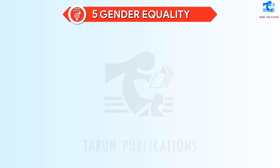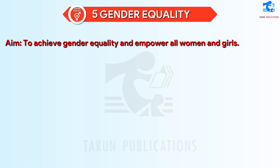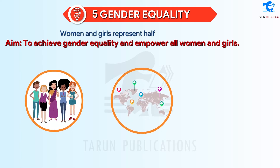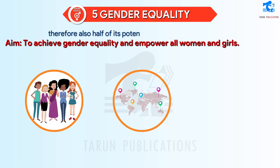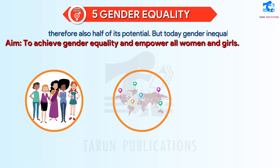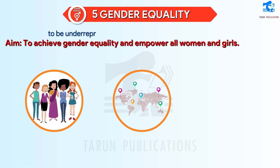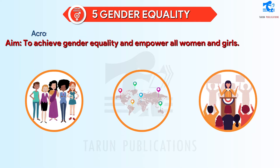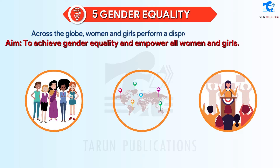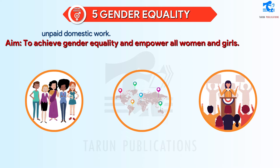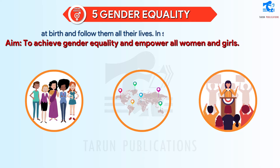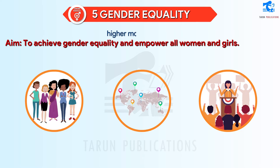SDG 5: Gender Equality. Aim: to achieve gender equality and empower all women and girls. Women and girls represent half of the world's population and therefore also half of its potential. But today gender inequality persists everywhere and stagnates social progress. Women continue to be underrepresented at all levels of political leadership. Across the globe, women and girls perform a disproportionate share of unpaid domestic work. Inequalities faced by girls can begin right at birth and follow them all their lives. In some countries, girls are deprived of access to health care or proper nutrition, leading to a higher mortality rate.